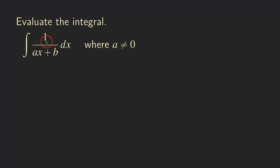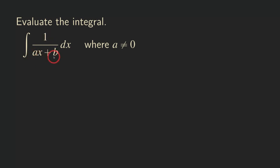Its numerator is a constant, and its denominator is a linear function. As you can see here, we have ax plus b, where a and b are both constants. We are going to assume that these are real numbers, and we also need to make sure that a is non-zero. Because if a equals 0, then ax equals 0, and we have only 1 over b, which is a constant — a different type of function. So we do want a to be non-zero so that we have a linear expression in the denominator.